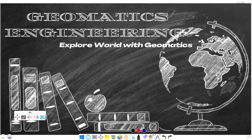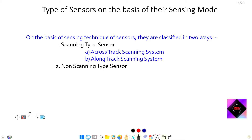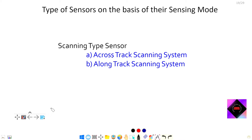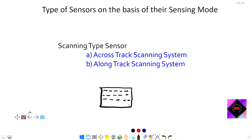Starting our lecture on the classification of sensors on the basis of their sensing mode. There are two types: scanning type sensors and non-scanning type sensors. In scanning type sensors, there are two further types: a cross-track scanning system and an along-track scanning system. Scanning type sensors obtain terrain information by sweeping the sensor over the terrain.